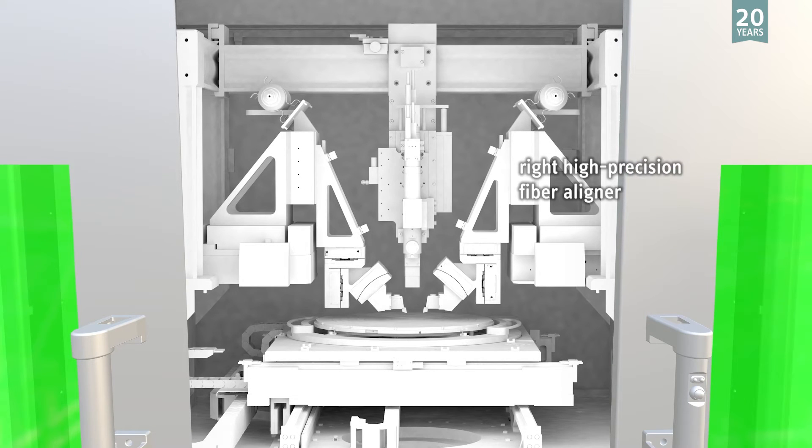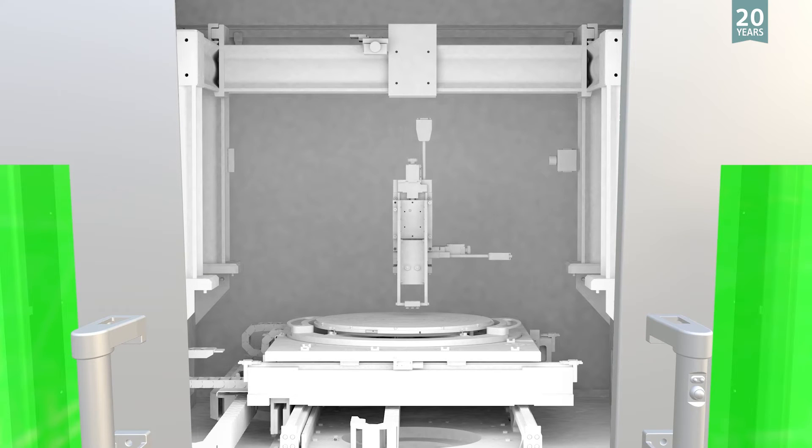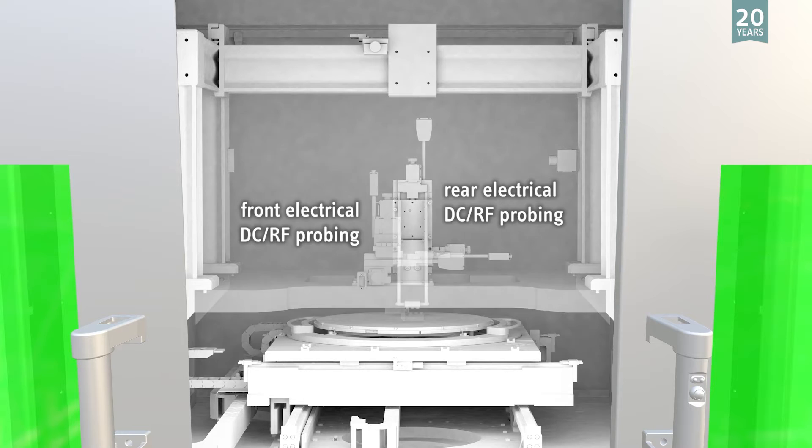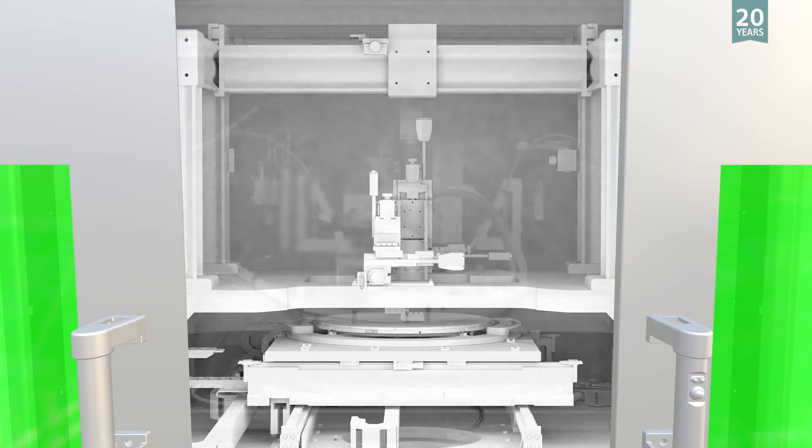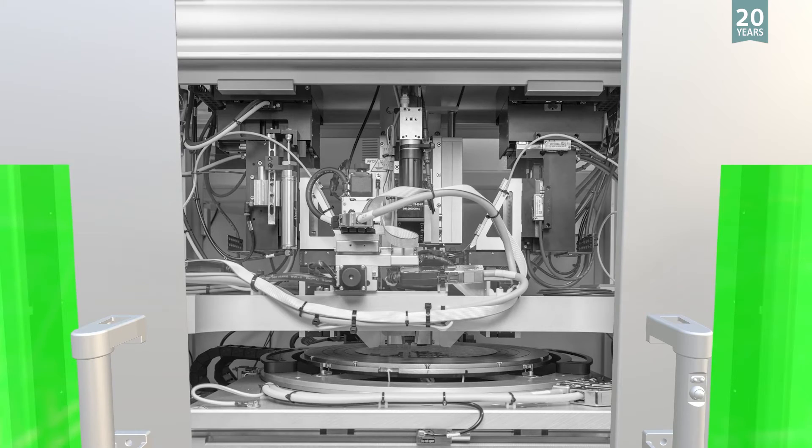Dual High Precision 6-Axis Fast Fiber Aligners. Electrical Probing can be configured from any direction. System Referencing.